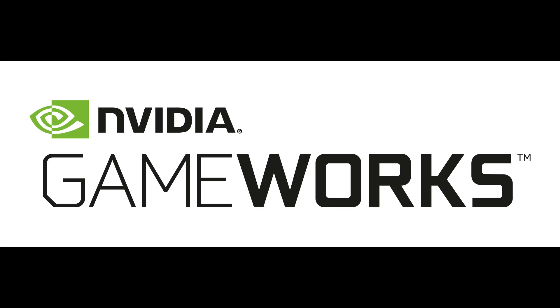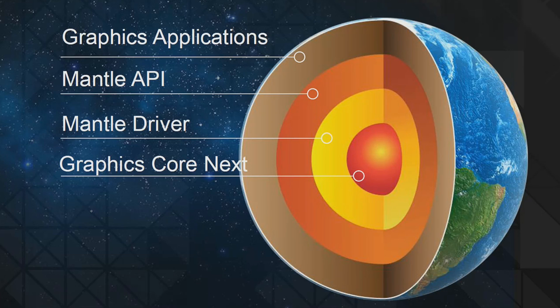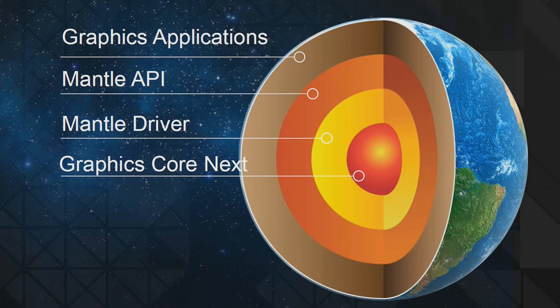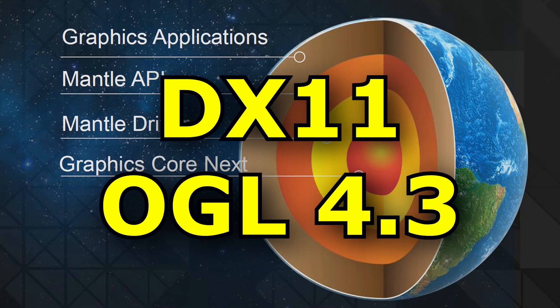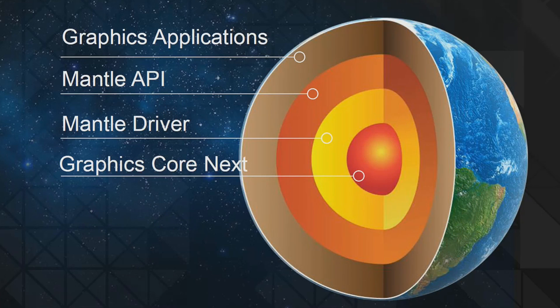Some people confused Mantle with GameWorks, saying that they were basically the same thing. But it's not the case. GameWorks is more like middleware, which kind of plugs into your graphics applications or your games. What Nvidia has to do is make it compatible with the API. Currently, GameWorks is only compatible with DX11 and OpenGL 4. That's a kind of high-level overview of both Mantle and GameWorks.